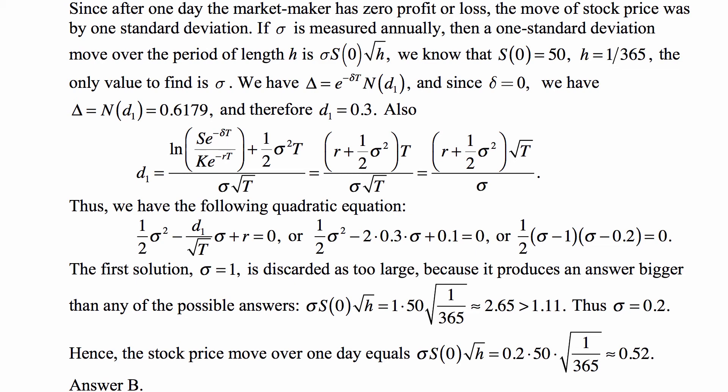And if we plug in all the numbers, then we get 1/2 σ² - 2(0.3)σ + 0.1 = 0. And that's a quadratic equation that factors out into 1/2(σ - 1)(σ - 0.2) = 0.